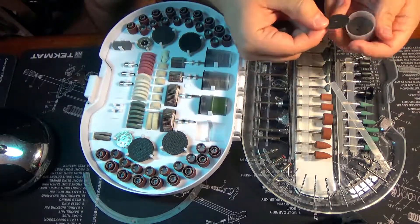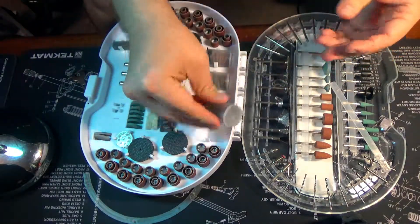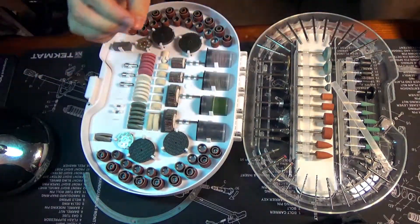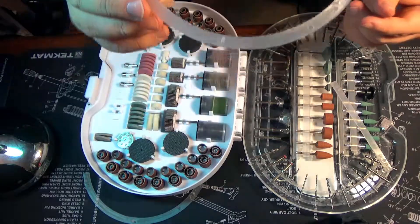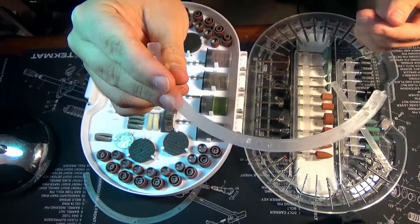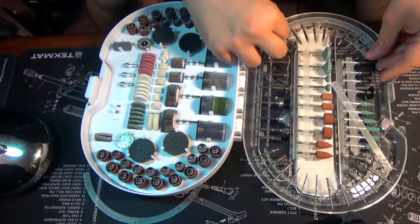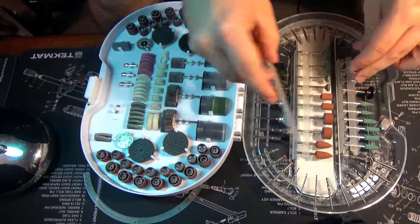You get these little packs of sanding and cutoff wheels, always useful. It's a really well-designed case, I'm not going to lie, I love this. It's got these little tabs that just push right in, and you got little holes right here. You just line them up and push them in and they're good to go.